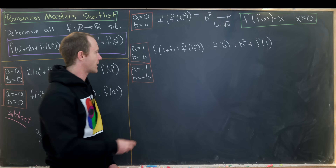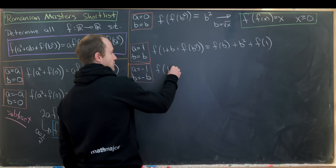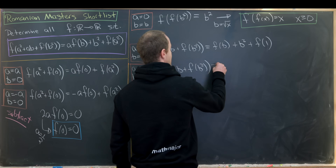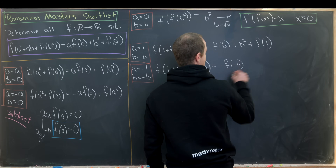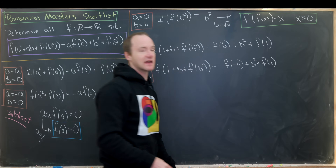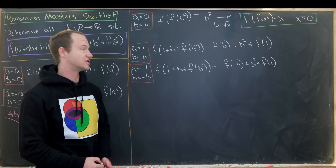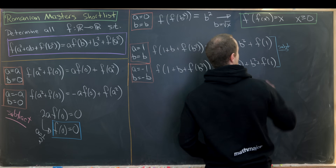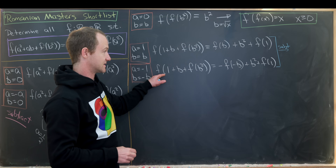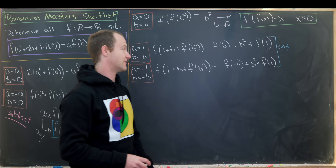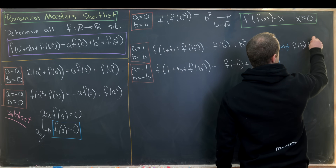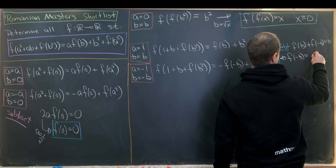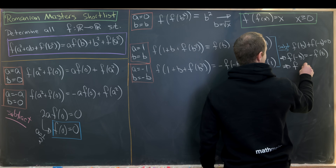Plugging a = 1, b = b into the functional equation gives f(1 + b + f(b²)) = f(b) + b² + f(1). Plugging a = -1, b = -b gives the same left-hand side, but the right-hand side becomes -f(-b) + b² + f(1). Subtracting the two equations causes most terms to cancel, leaving us with f(b) + f(-b) = 0, which means f(-b) = -f(b). So f is an odd function.